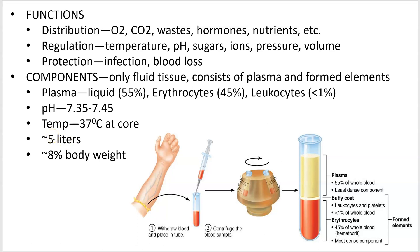The average blood volume is five liters — that's about a gallon and a half — and it depends on your size. Shaquille O'Neal has more than five liters, and a racehorse jockey has less. That makes up roughly 8% of your body weight. If you weigh 100 pounds, you've got about 8 pounds of blood; if you weigh 200 pounds, you've got about 16 pounds of blood.